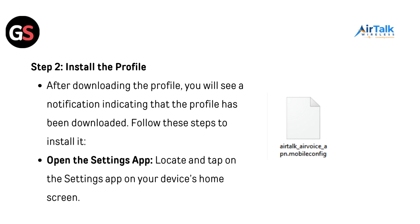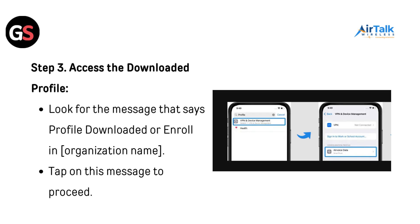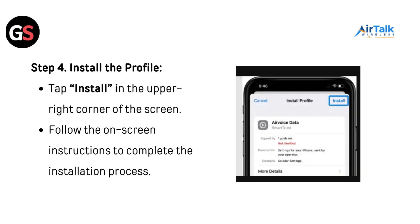Step 2: Install the profile. Open the settings app, locate and tap on the settings app on your device's home screen. Step 3: Access the downloaded profile. Look for the message that says 'Profile Downloaded' or 'Enroll in Organization Name' and tap on this message to proceed. Step 4: Install the profile. Tap Install in the upper right corner of the screen and follow the on-screen instructions to complete the installation process.